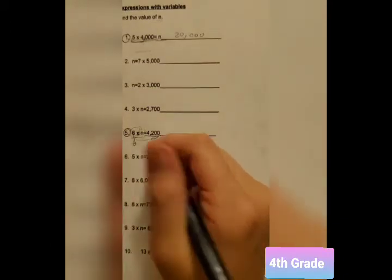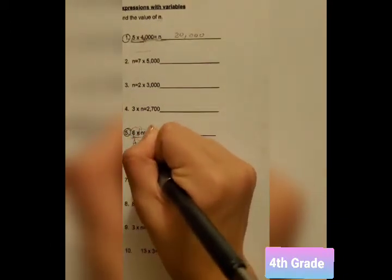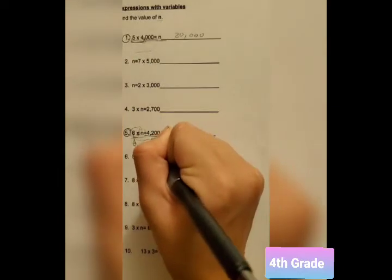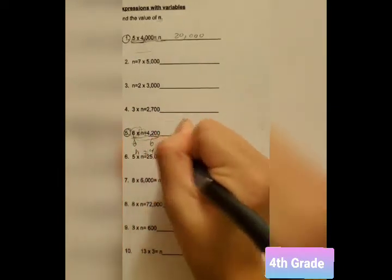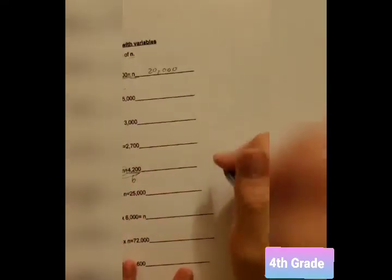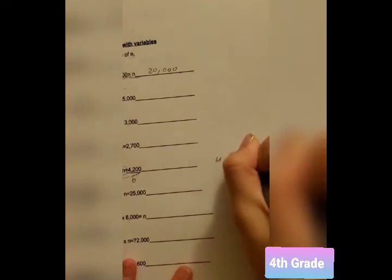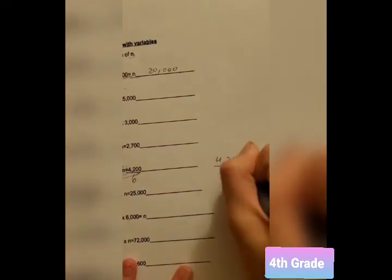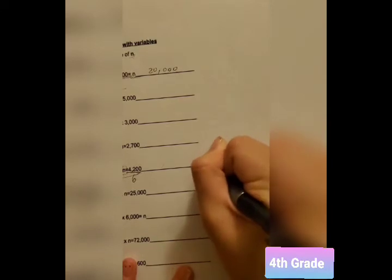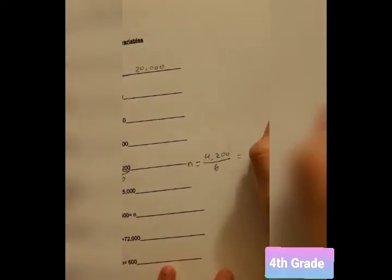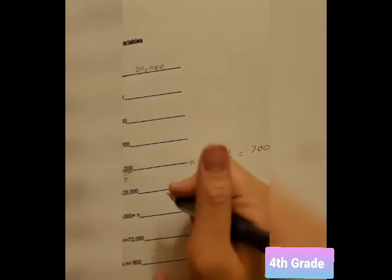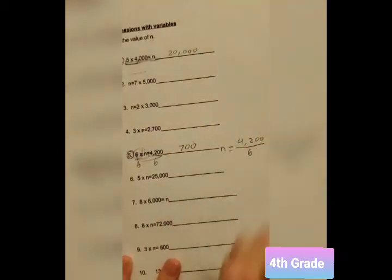So, then, when we do this, we're left with n equals 4,200. Let me write down over here. 4,200 divided by 6 is n. And when we solve that, we'll get the answer 700. So, we could just write that down right over here.